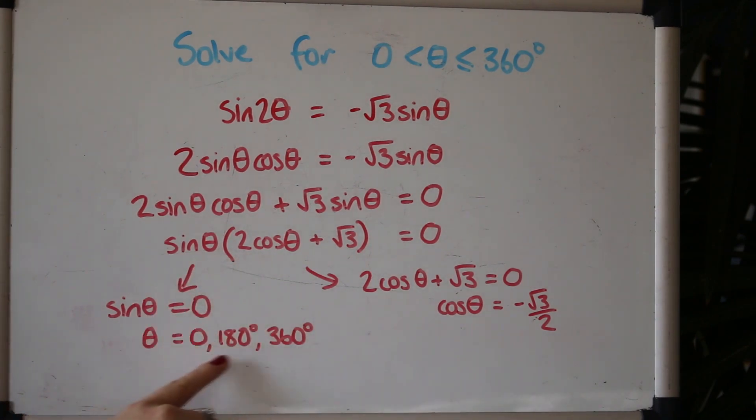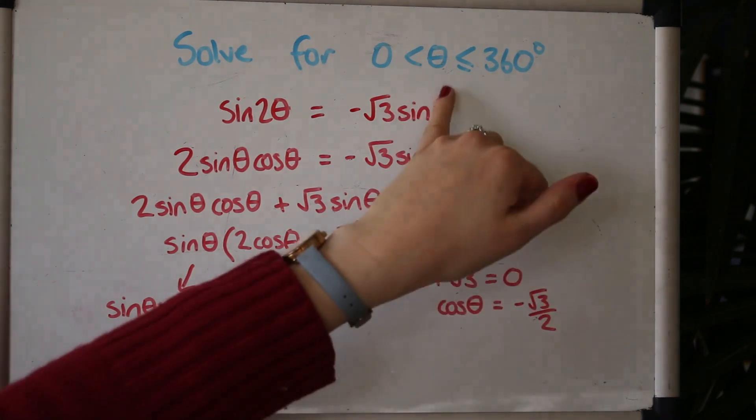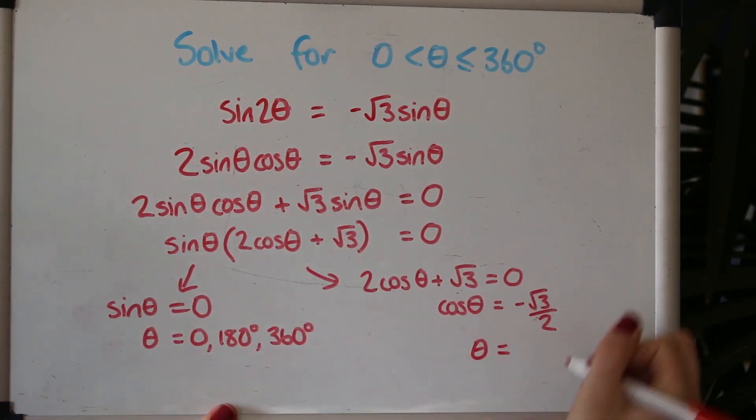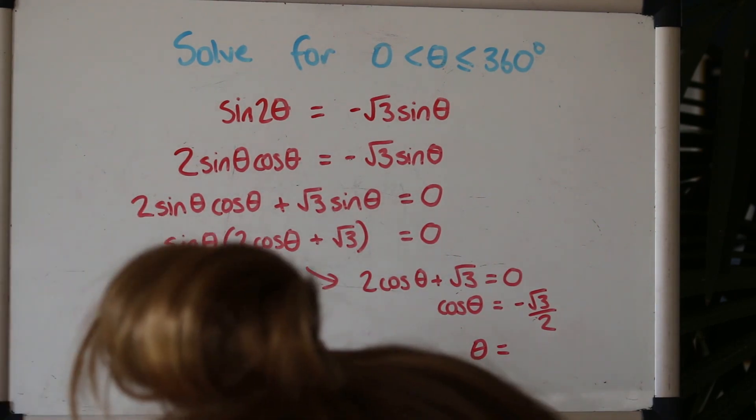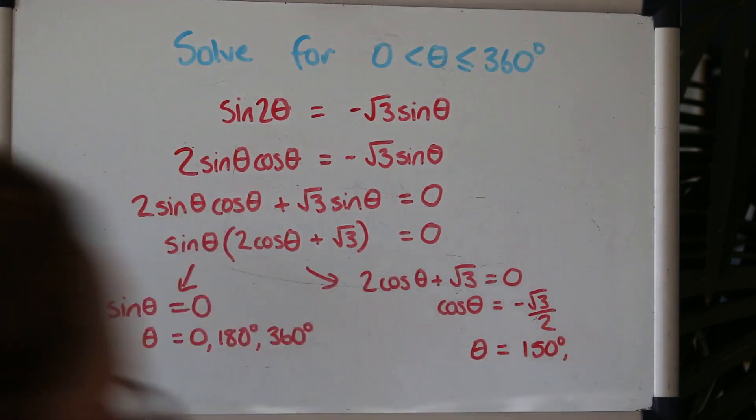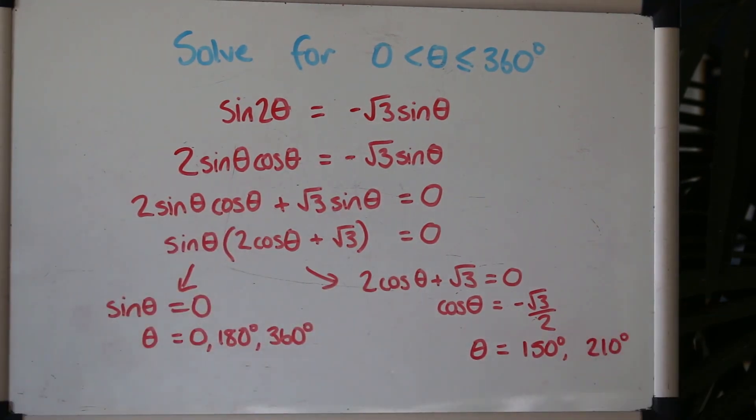So this one gave sinθ equals zero, gave three solutions, and this one you can use either the CAST diagram or the cos graph to find the solutions within the range that we've got. The first solution is from the calculator. And of course if you want to go over how to get multiple solutions you can check out my other video on that.